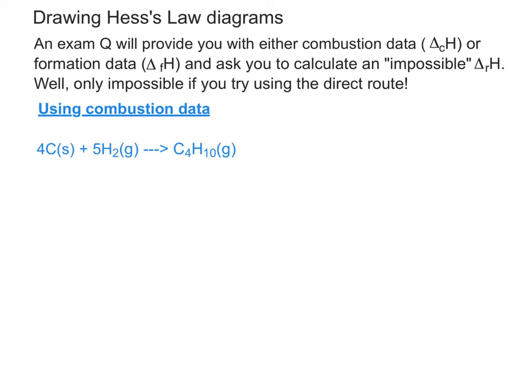But what you can do is actually burn some carbon and burn some hydrogen and separately burn some butane. So if we now put down the data that the question would provide you with, we can construct a Hess's law cycle and do the calculation. So assuming it gives us these values, these values are for the combustion of carbon, of hydrogen and of butane. So what you do is at the bottom, underneath your reaction, you write in the combustion products of the reactants and the products that you've got.